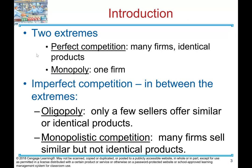By way of introduction, there are two streams of market models we have studied: perfect competition — many firms, identical products — and monopoly — one firm. Now we're getting to deal with imperfect competition, which is in between these two extremes. One is oligopoly, which we'll deal with in the next chapter — only a few sellers offer similar or identical products. The other is monopolistic competition — many firms sell similar but differentiated products.